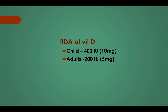RDA of Vitamin D: In children, 400 international units or 10 micrograms. In adults, 200 international units or 5 micrograms.